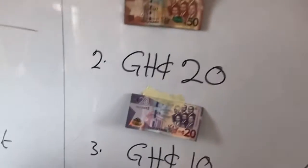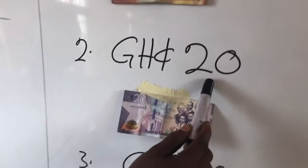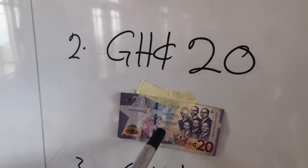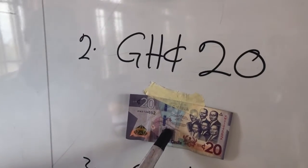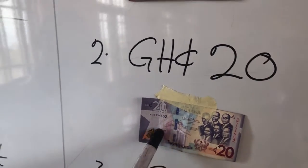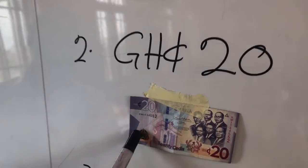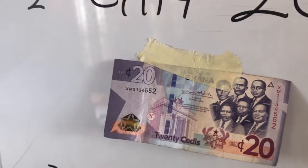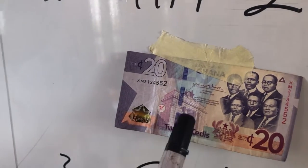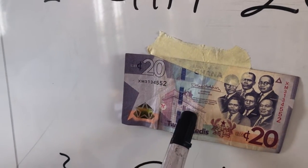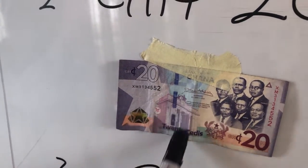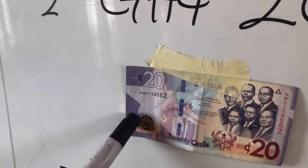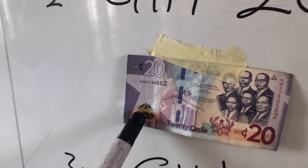Let's look at the other one - 20 Ghana cedis. This is the 20 Ghana cedis note. Look at it. It is also having similar features, but let's look at some of the differences.